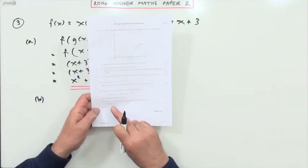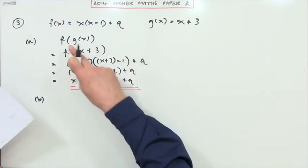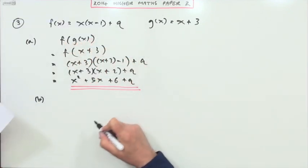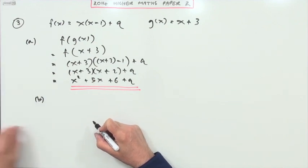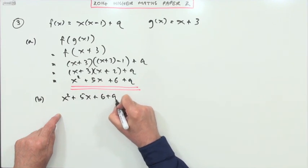Now the second part says find the value of q such that the equation f of g of x equals zero has equal roots. Well, this will be the equation then: x squared plus 5x plus 6 plus q equals zero, which is a quadratic.